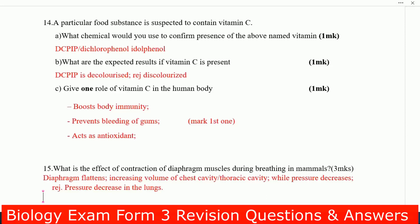What are the expected result of vitamin C? If vitamin C is present, DCPIP is decolorized. Go to the next one. Give one role of vitamin C in the human body. Number one, boost body immunity. Number two, prevent bleeding of gums. Next, act as antioxidants.